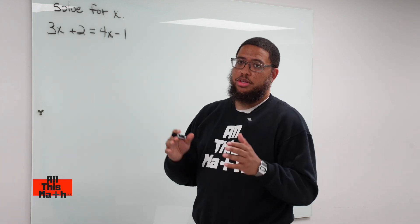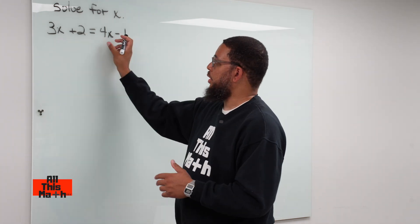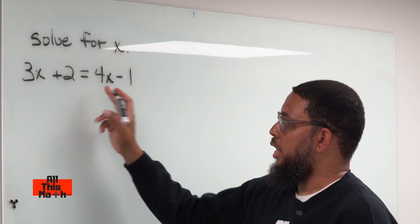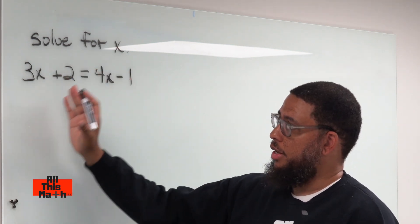Now I want to talk about this method called transposing. What is transposing? Transposing is essentially when you just pick numbers up and move them to other sides of the equal sign. See, our equal sign is right here. The equal sign divides the equation into a left side and the right side.